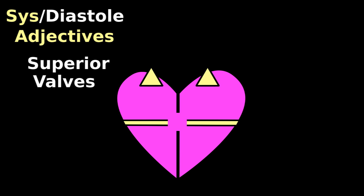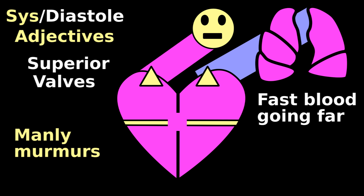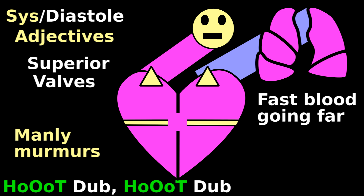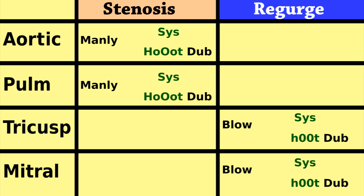Since superior valves control fast blood going far, they have loud, forceful murmurs: chut-dub, chut-dub. Bottom valve murmurs whine like blowing wind: chut-dub, chut-dub.